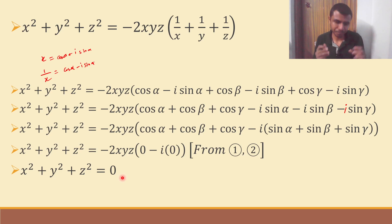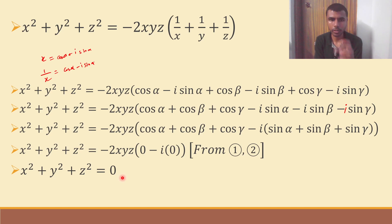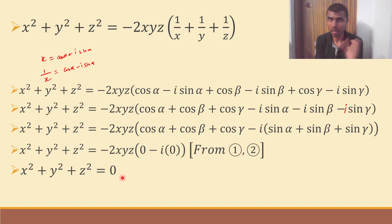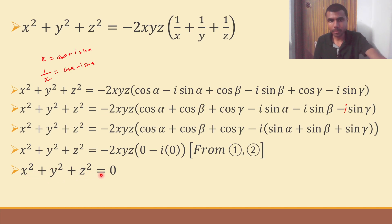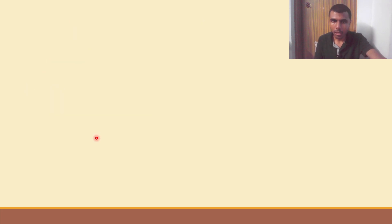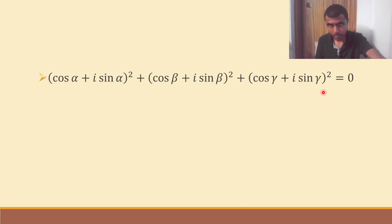So, we got x² plus y² plus z² equals zero. Now, using this condition, I'm going to get what they asked — cos² α plus cos² β plus cos² γ. What is x? Cis α, that means cos α plus i sin α. What is y? Cos β plus i sin β. What is z? Cos γ plus i sin γ. So in place of x, y, z, squares are there. Here is where De Moivre's theorem is going to come into picture.